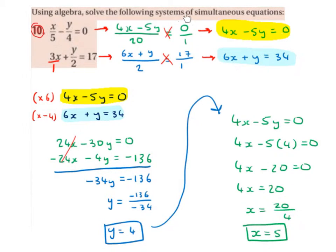Using algebra, solve the following systems of simultaneous equations: x over 5 minus y over 4 equals 0, and 3x plus y over 2 equals 17. What we want is to get rid of the fractions in each equation and then solve them simultaneously.